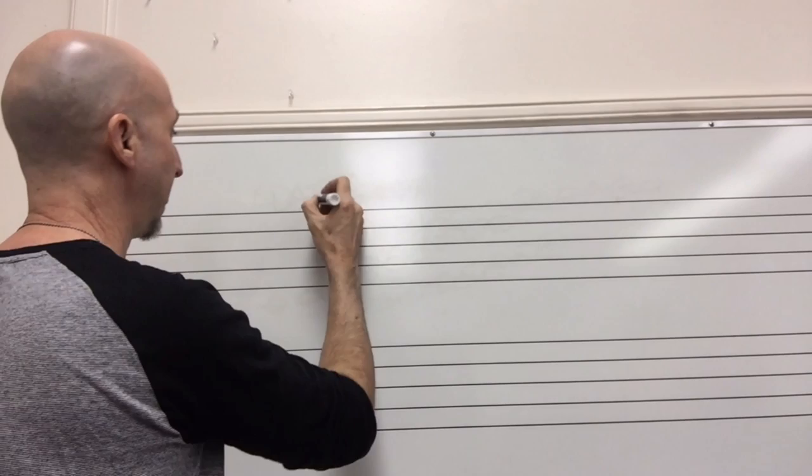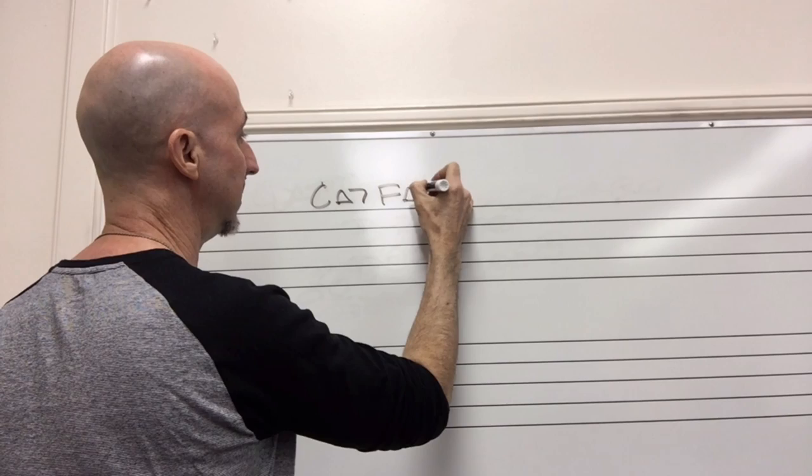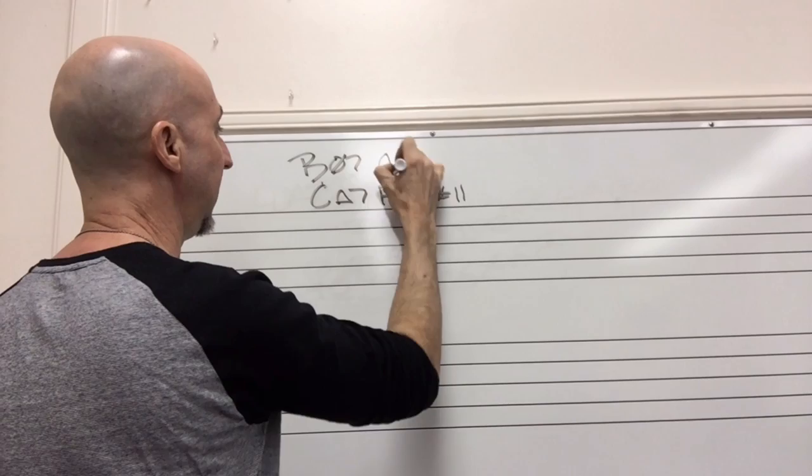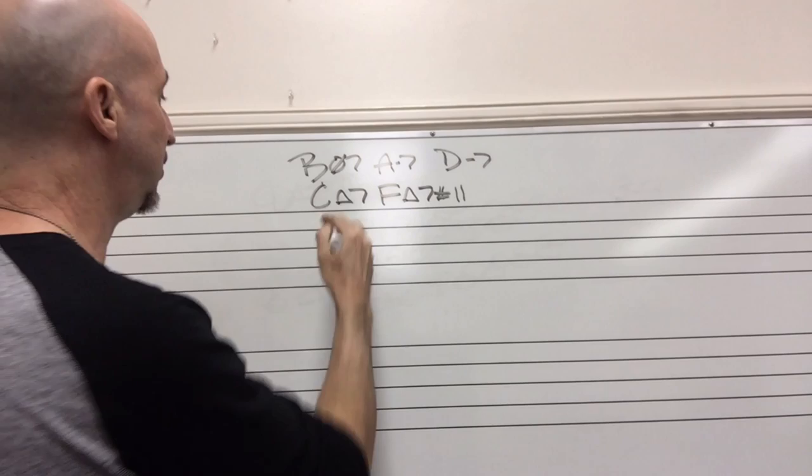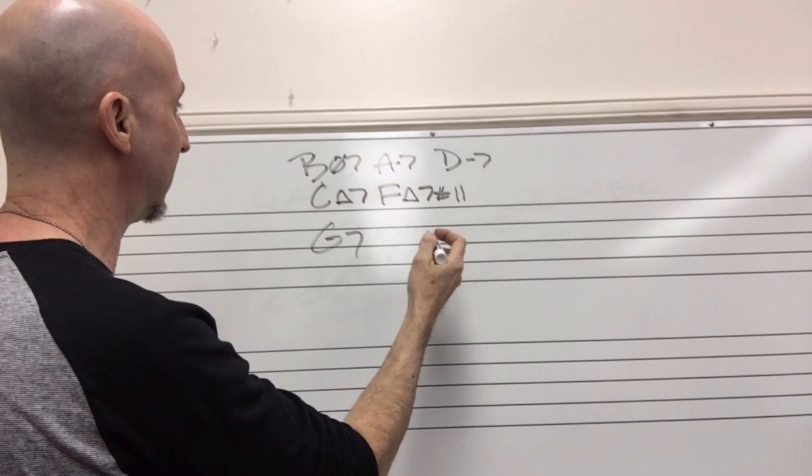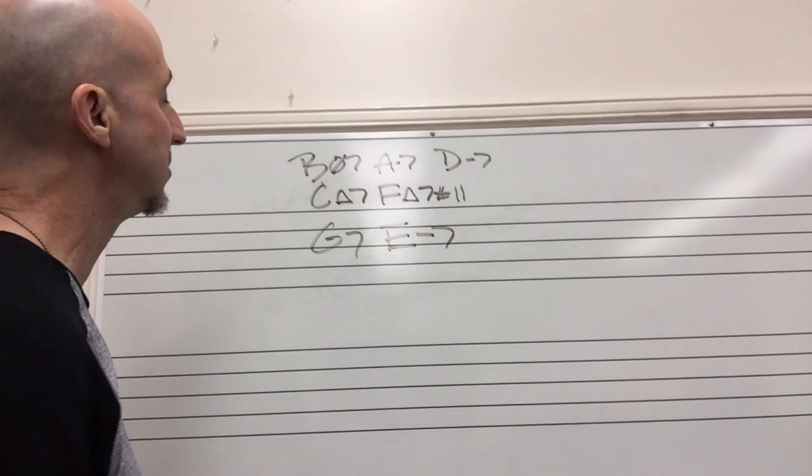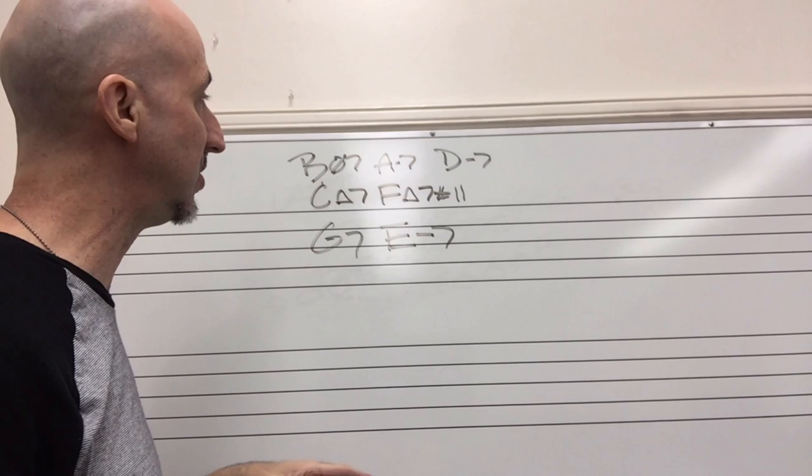C major seven, F major seven sharp 11, B half diminished, A minor seven, D minor seven. What did I leave out? G7. That's six. And we could also think of Phrygian mode, which is also minor—E minor seven. So there's seven chords that you can use, that you can play over by just using the C major scale.